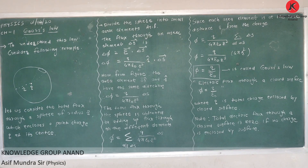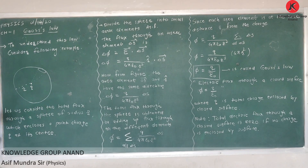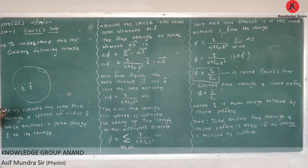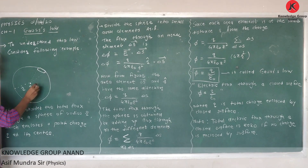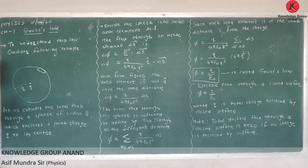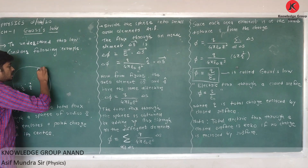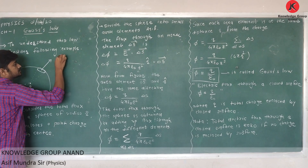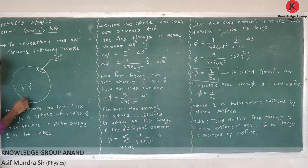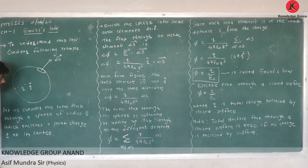To find total flux, first divide the surface of the sphere into very small elements. One such element has area delta S. The area vector is always perpendicular and pointing outward — normally outside. So its area vector is delta S pointing normally outside.